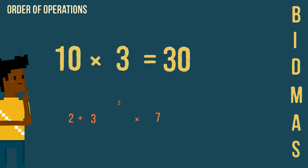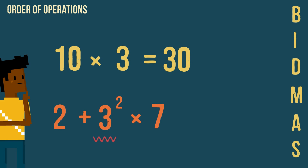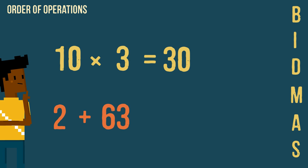For this example, there are no brackets. However there is an index number, so we work this out first. There is no division, but there is a multiplication, so we work this out, followed then by the addition.